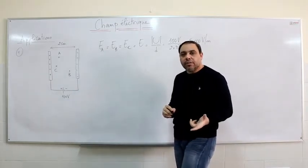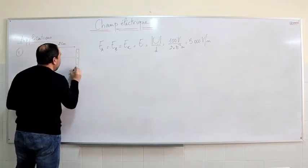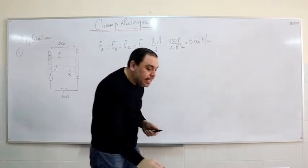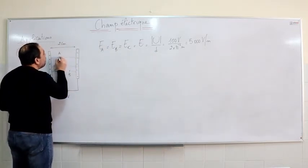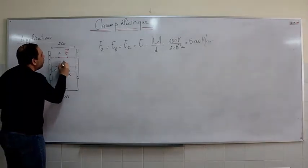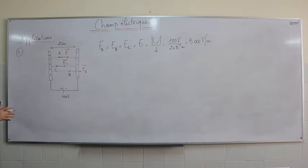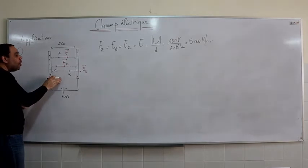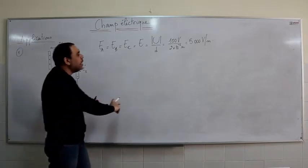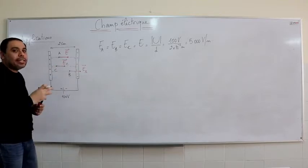Now let's find the line of action and direction of each vector. The line of action of each vector is perpendicular to the plates. Each vector is directed from the positive plate to the negative plate, with magnitude 5000 volts per meter. All the electric field vectors are parallel and have the same magnitude, independent of the position of the point between the plates. It is a uniform field.